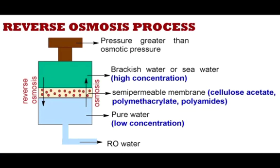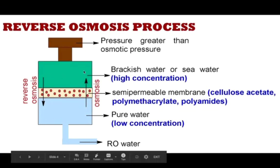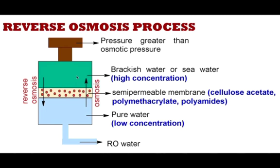In the process, brackish water or seawater — which has higher concentration of dissolved salts — and pure water are separated by a semi-permeable membrane. The semi-permeable membrane is usually made up of cellulose acetate, polymethacrylate, or polyamides.